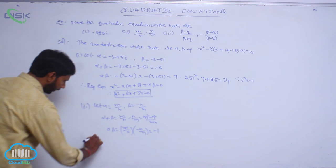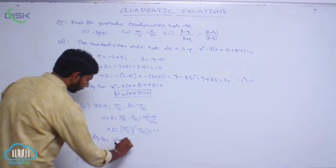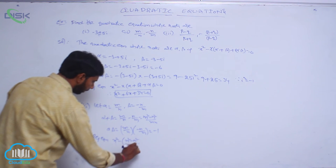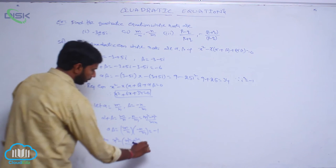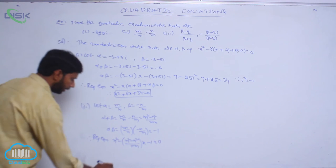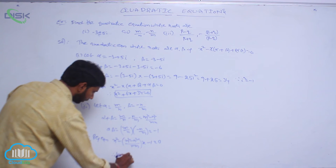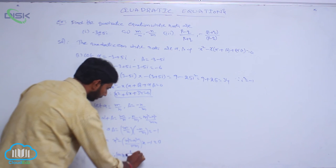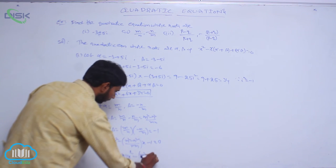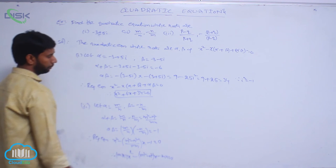Therefore, the required equation is x squared minus (m squared minus n squared)/(mn) · x minus 1 = 0. After taking LCM, the required equation is mn·x squared minus (m squared minus n squared)·x minus mn = 0.